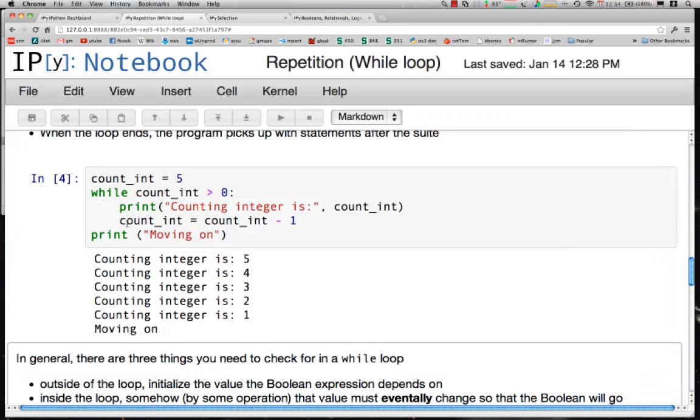The first time through we say that the print of the counting integer is 5. That is what it started at. Then every time we go through the loop, very importantly, count goes down by 1. At the second iteration, the count becomes 4, then 3, then 2, then 1.